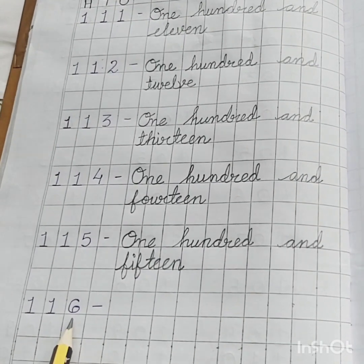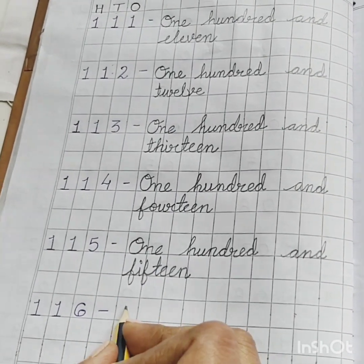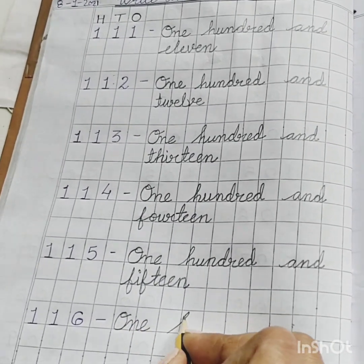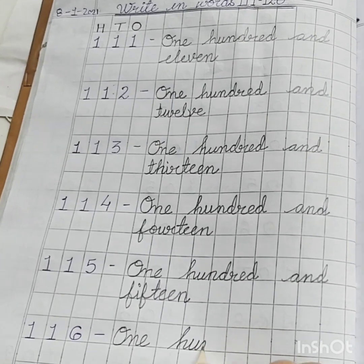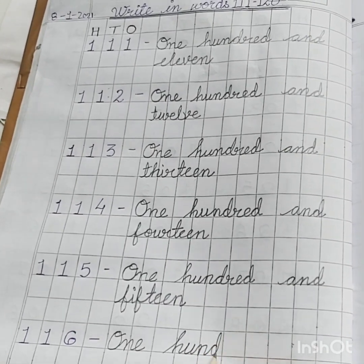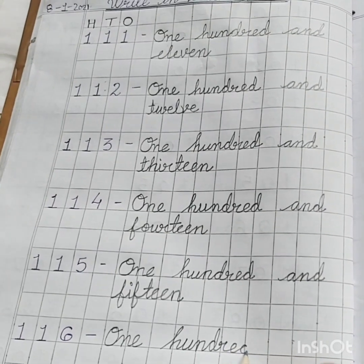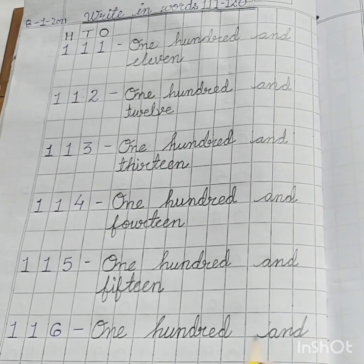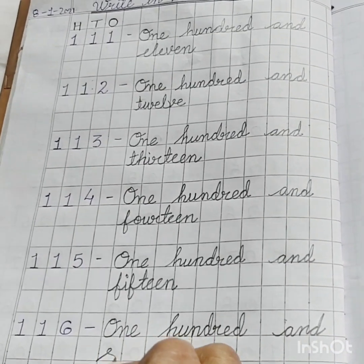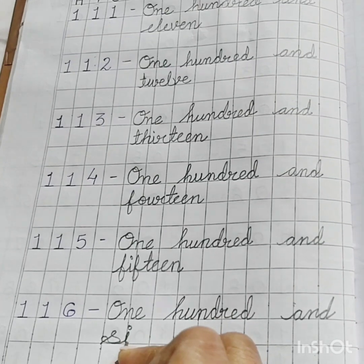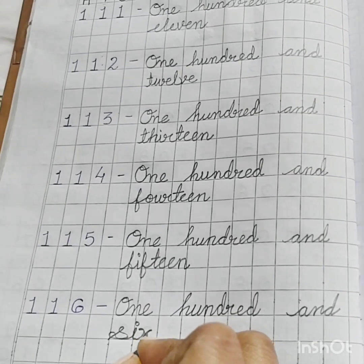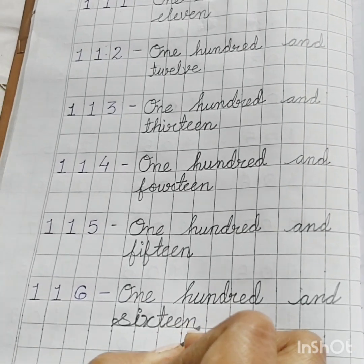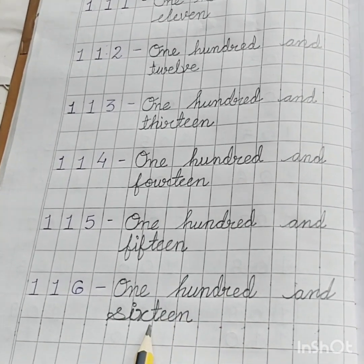Next, one hundred and sixteen: O, N, E — one; H, U, N, D, R, E, D — hundred; A, N, D — and; S, I, X, T, double E, N — sixteen. 16 — one hundred and sixteen.